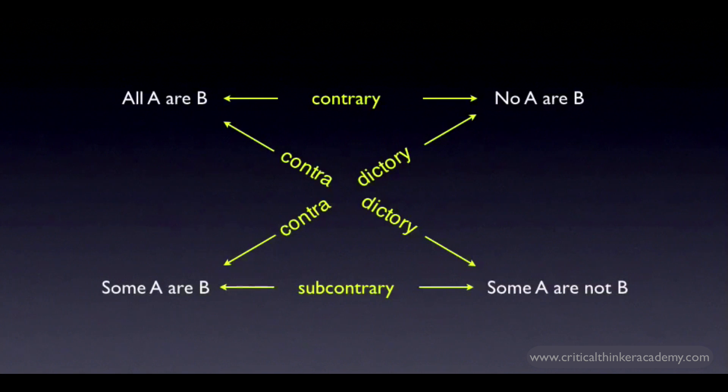The contradictories are on the diagonal. At the top, you have contraries. All A or B and no A or B can't both be true, but they can both be false.